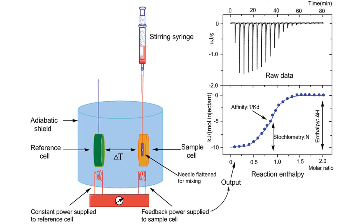So how do we measure key thermodynamic values like binding enthalpy and entropy? One key gold standard method is isothermal titration calorimetry. ITC resembles a regular equilibrium titration, except it also tracks the changes in thermodynamic parameters by comparing a sample cell to a reference titration. This is useful because it allows for a direct measurement of delta G and delta S while also providing information about the stoichiometry of the reaction.